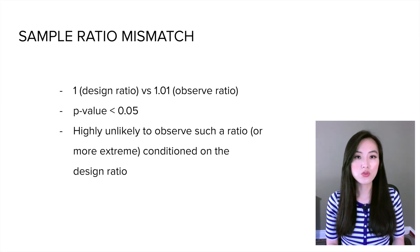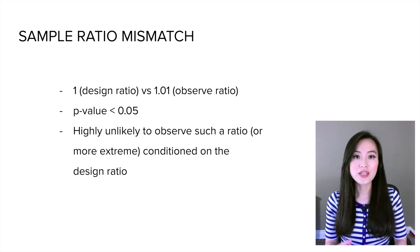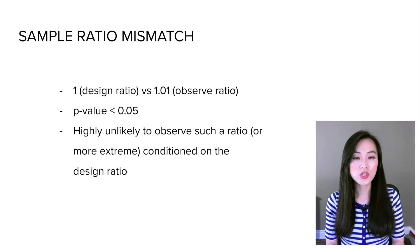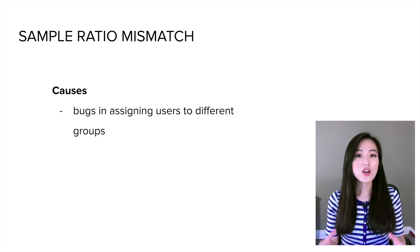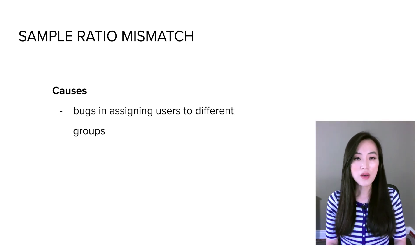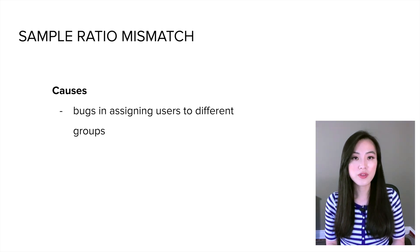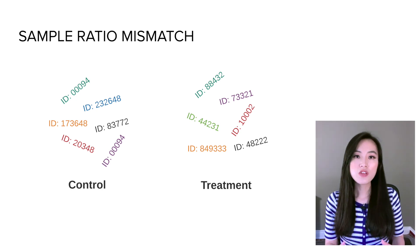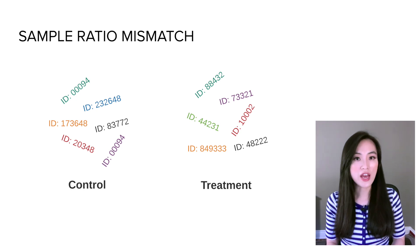You then use a t-test to check if the number of users in the control group differs from that in the treatment group, and you obtain a p-value less than 0.05. You now realize it's highly unlikely to observe such a ratio or more extreme, conditioned on the designed ratio. There are many causes of sample ratio mismatch — one is simply bugs or problems in assigning users to different groups. While randomly assigning users based on user ID may sound simple, achieving proper randomization can be very challenging in reality.